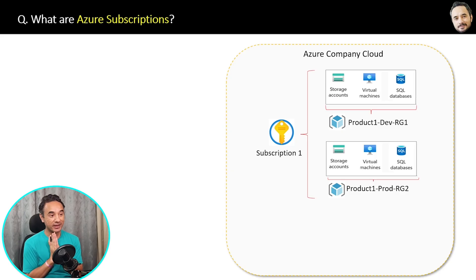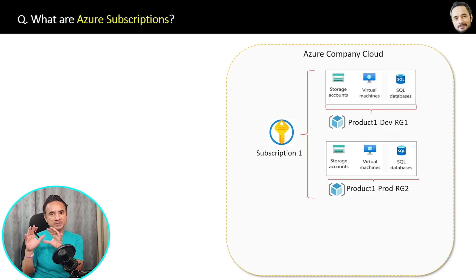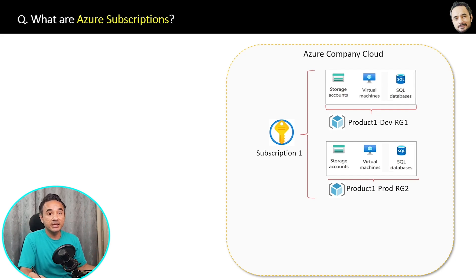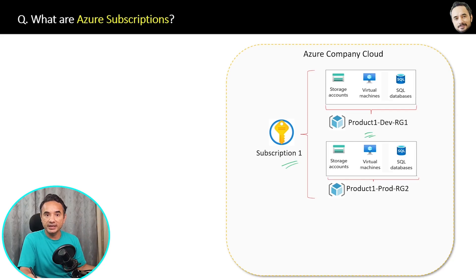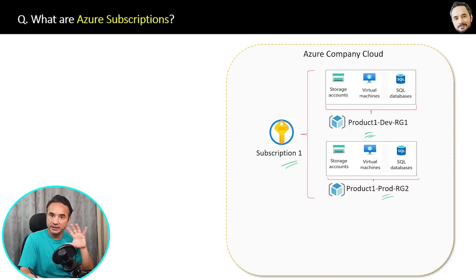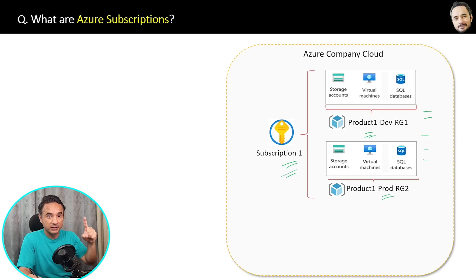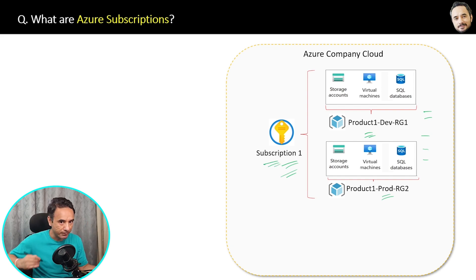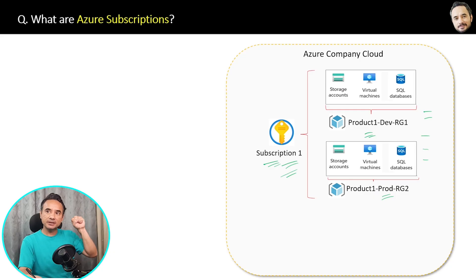You might ask: why are we creating groups of groups? Resource groups are mainly for access control — a member of one resource group can't access another resource group's resources. A subscription is mainly related to billing and managing resources at a high level. For example, for one product there can be different resource groups for development and production, and the product manager or product owner will have top-level subscription access — they will pay the bills and manage or delete the resources.